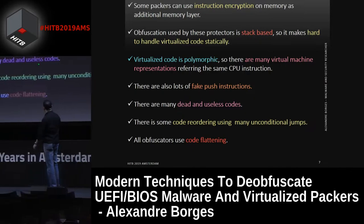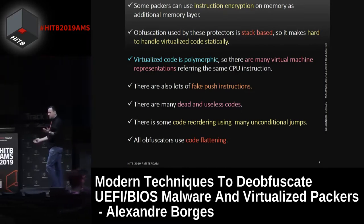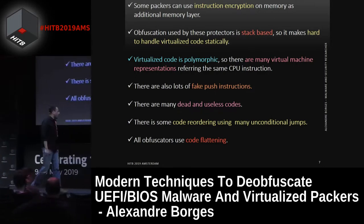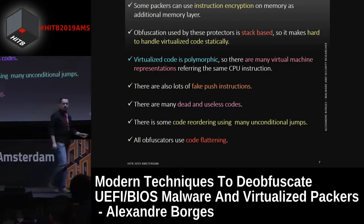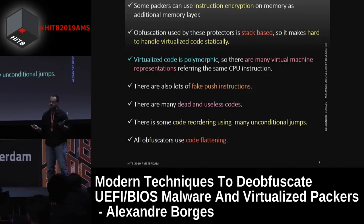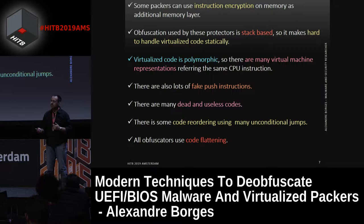We also have lots of dead code, useless code, to try to mess things up. There are lots of code reordering, for example using many unconditional jumps — a kind of spaghetti code. Reversing sophisticated protectors like Themida and VMProtect is so difficult. There are lots of tricks being used, and we try to use different techniques and different tricks to handle them.